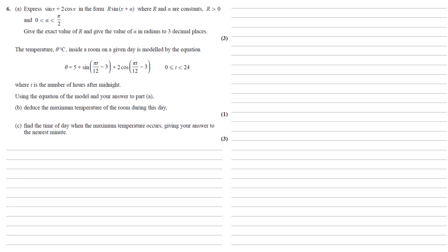Express sin x plus 2 cos x in the form r sin(x plus alpha), where r and alpha are constants, r larger than 0 and alpha between 0 and pi over 2. We need to give the exact value of r and give the value of alpha in radians to three decimal places.